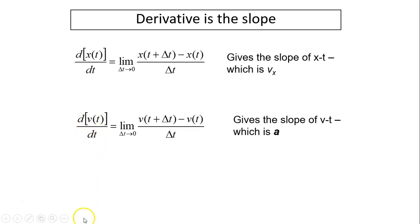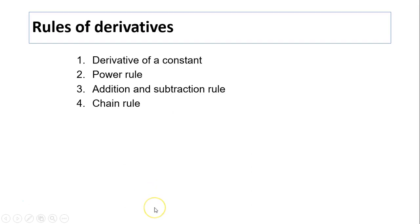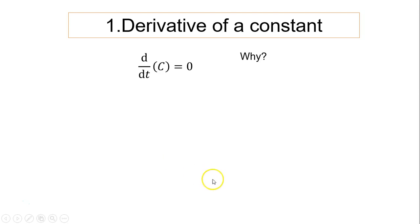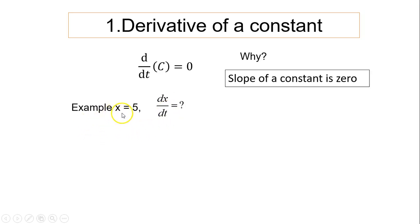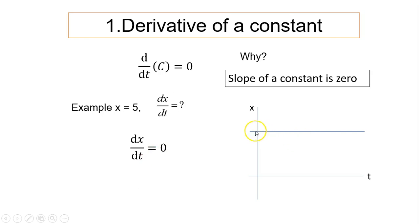So dv over dt gives you acceleration. Now, the rules of derivatives: derivative of a constant, power rule, addition and subtraction rule, and chain rule. The derivative of any constant equals zero. Why? Because for a constant, its slope is zero — derivative is the slope, so derivative equals zero. There is no change. For example, if x equals 5, the x-t graph is flat, slope equals zero, derivative equals zero because x does not change with t.